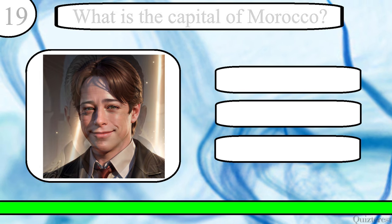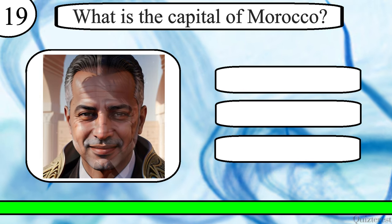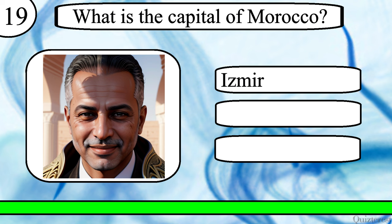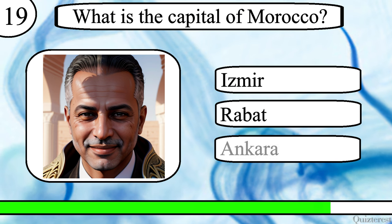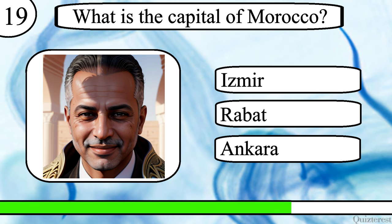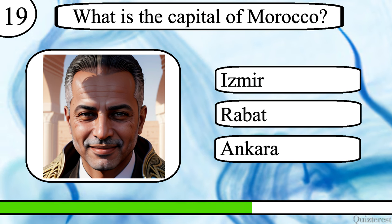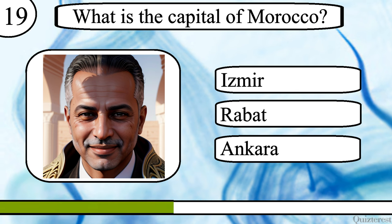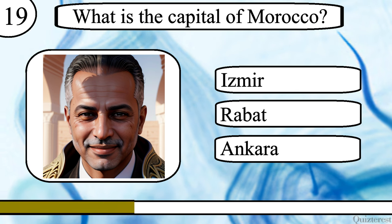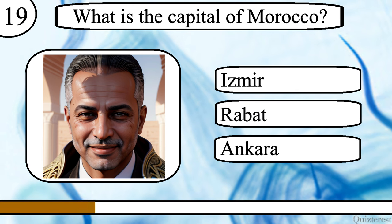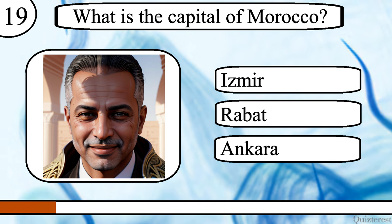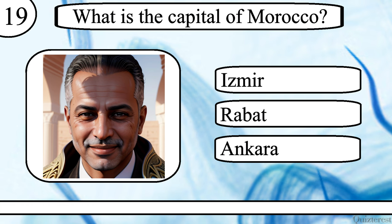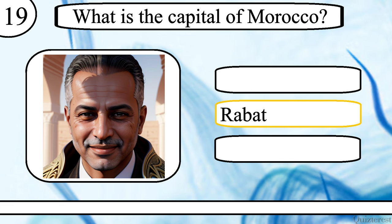Question 19. What is the capital of Morocco? Izmir, Rabat, or Ankara? The correct answer is Rabat.